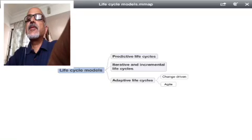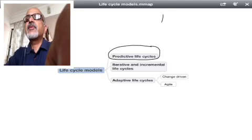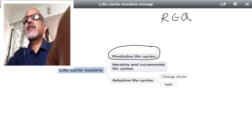The first one is the Predictive Styles. In the Predictive Styles, an example of this would be like first you have a requirements phase where you freeze the requirements completely, get the sign off. Then you get into the high level design, then you get a sign off for the high level design.